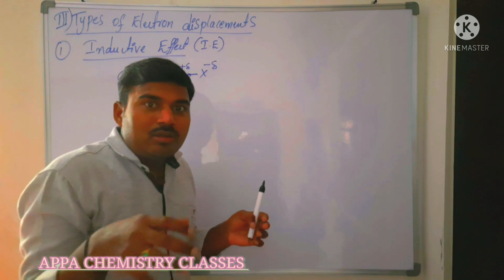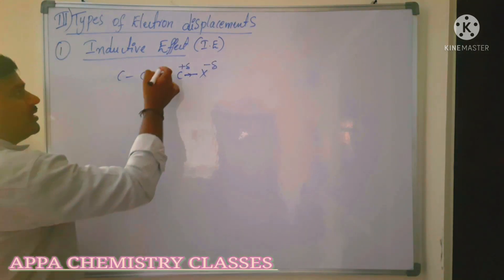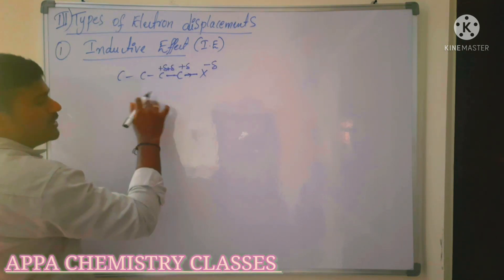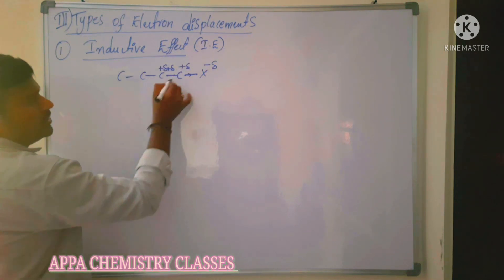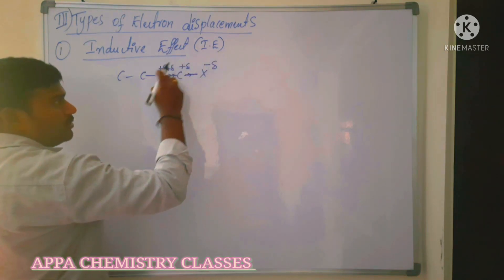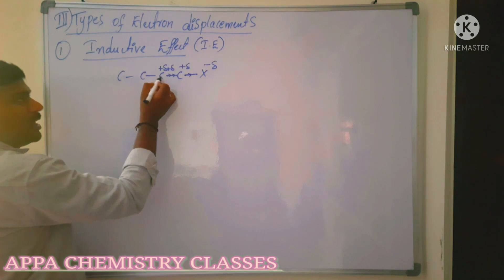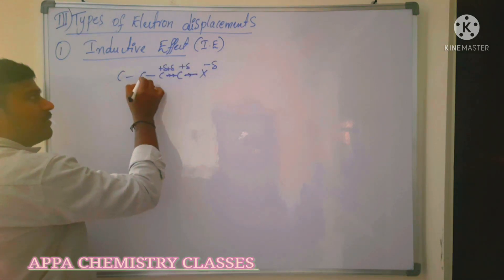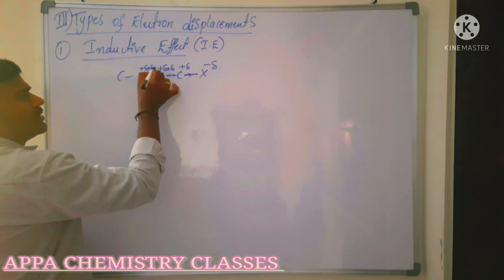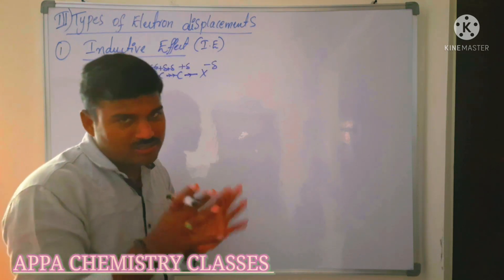This carbon, having lost electron density, then withdraws electrons from the next carbon along the chain. Each successive carbon has a progressively smaller partial positive charge compared to the one before it — the positive charge decreases along the chain.